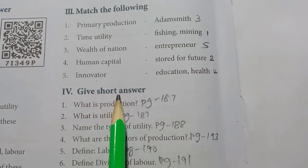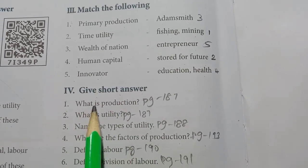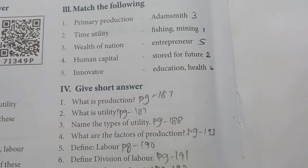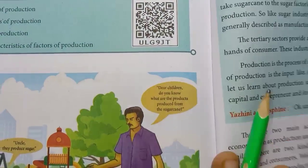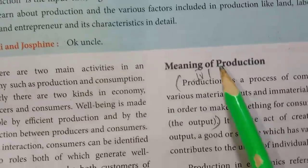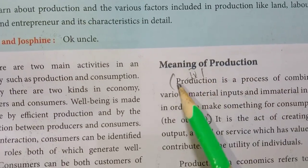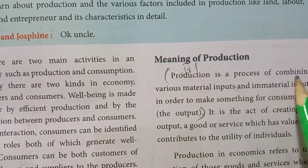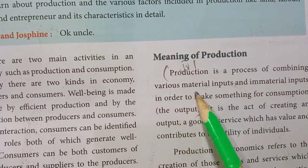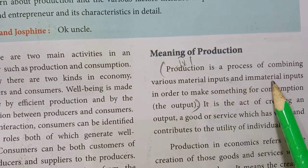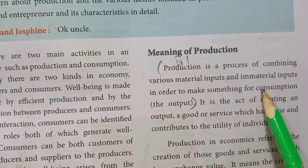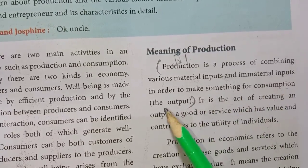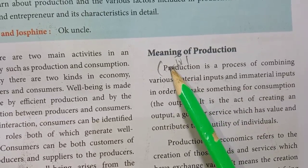Roman No. 4, Give Short Answer. First one: What is Production? Page No. 187, under the topic Meaning of Production. Production is a process of combining various material inputs in order to make something for consumption — that is the output.